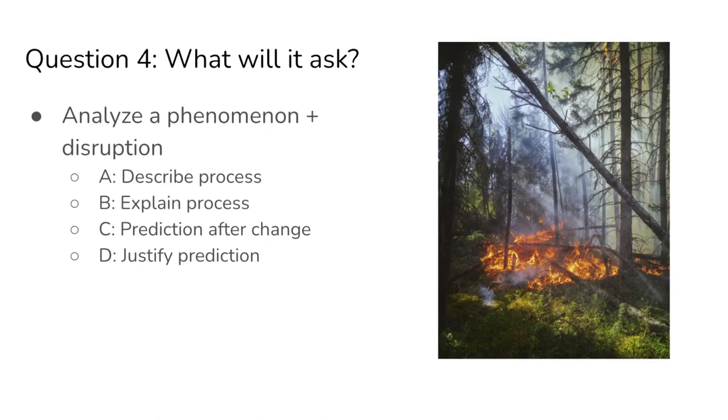Question four is usually about a biology phenomenon and a disruption to that phenomenon or process. In the first part, you're going to be asked to describe a certain part of the process. And then in part B, explain that process. In part C, there'll be some change that'll be talked about and you'll have to make another prediction. And then of course, you'll be asked in part D to justify that prediction.